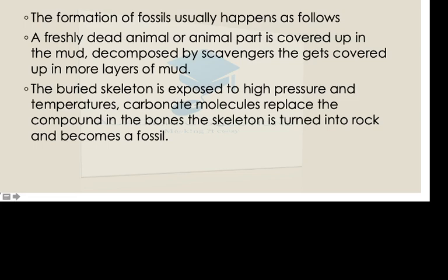The formation of fossils usually happens as follows: the freshly dead animal or plant part is covered up in the mud, decomposed by scavengers, and then covered up in more layers of mud or soil. The buried skeleton is then exposed to high temperatures and pressure, and carbonate molecules replace the compounds in the bones, so the skeleton is turned into rock and becomes a fossil.